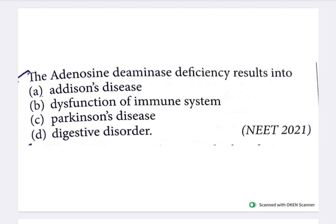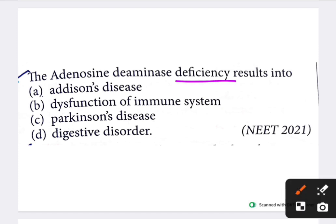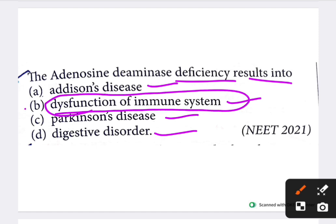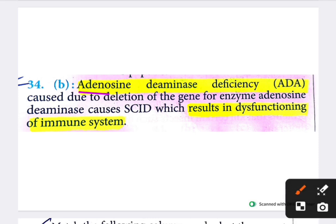Next question: adenosine deaminase (ADA) deficiency results in which condition? Options are adenosine disease, dysfunction of immune system, Parkinson's disease, and digestive disorder. The answer is dysfunction of immune system. ADA deficiency is caused by deletion of the gene for enzyme adenosine deaminase, causing SCID, which results in dysfunctioning of the immune system.